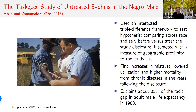Taken together, our results implied a decrease in Black adult male life expectancy enough to explain about 35% of the overall racial gap in 1980.